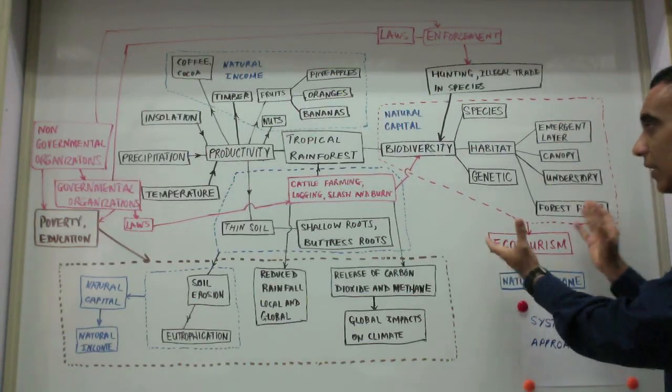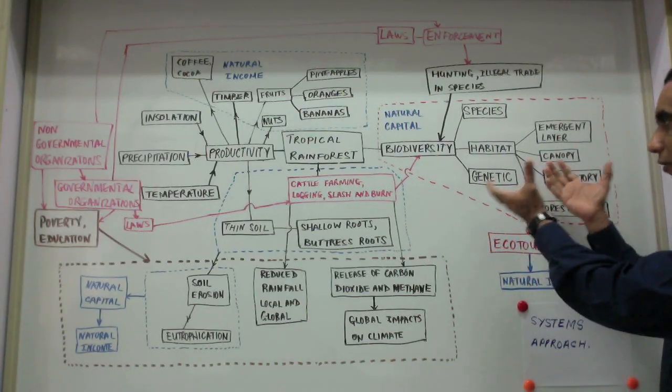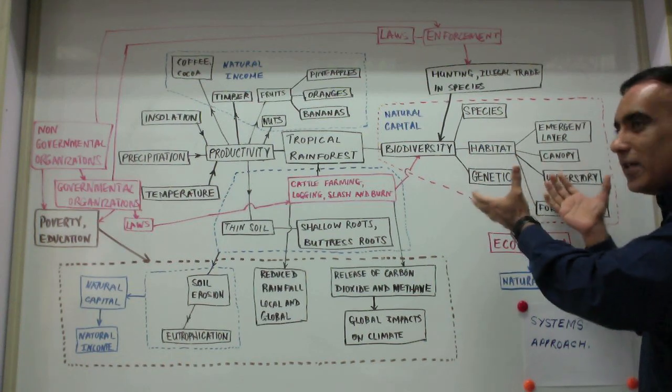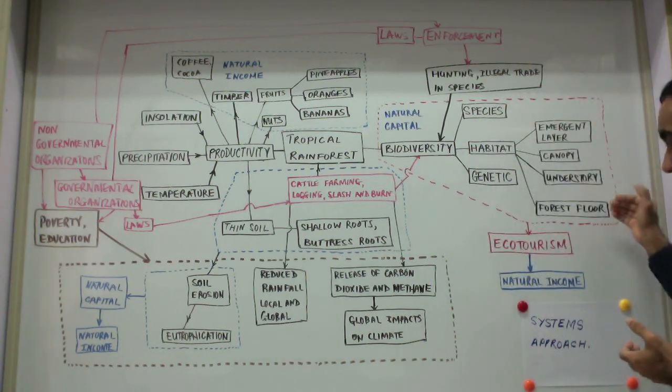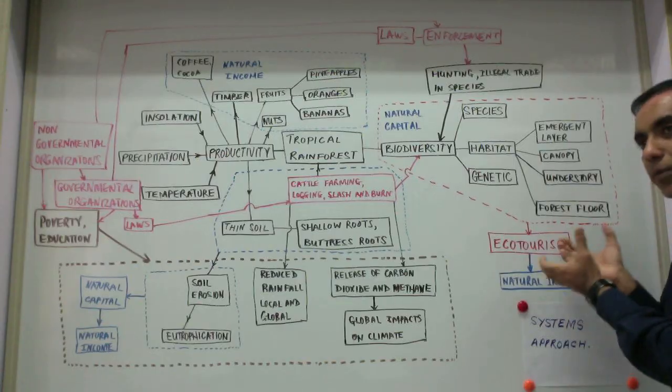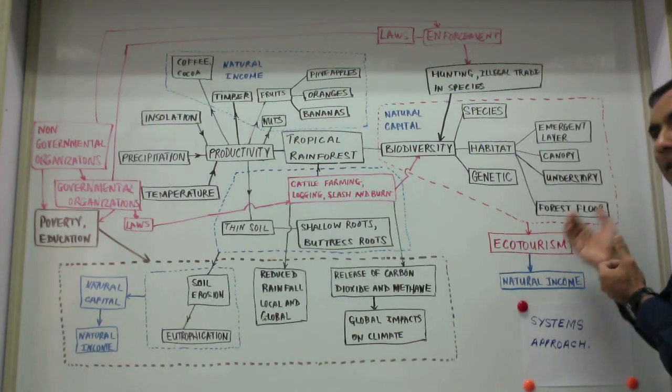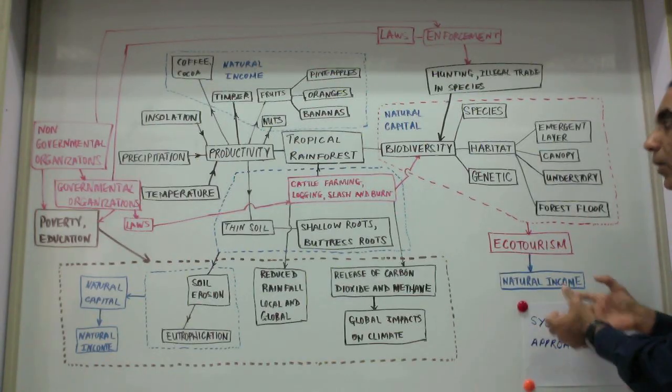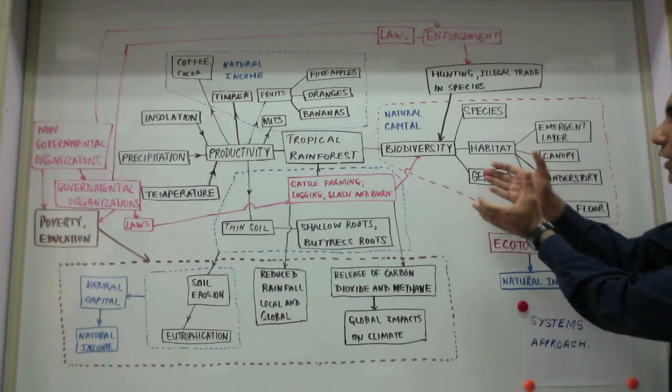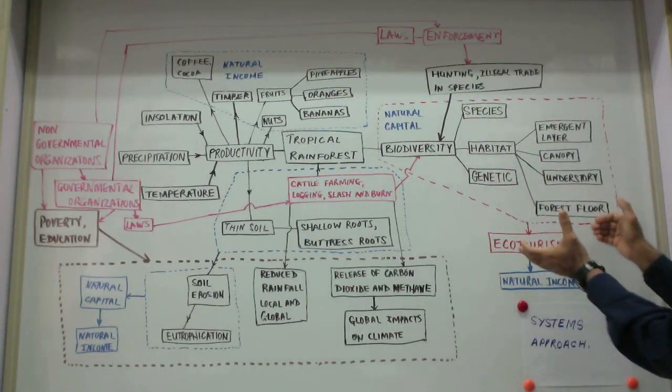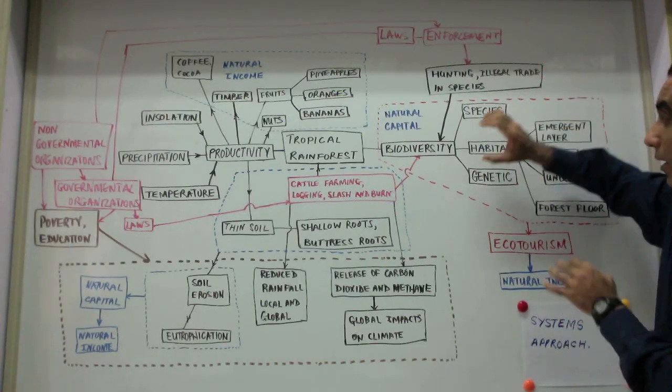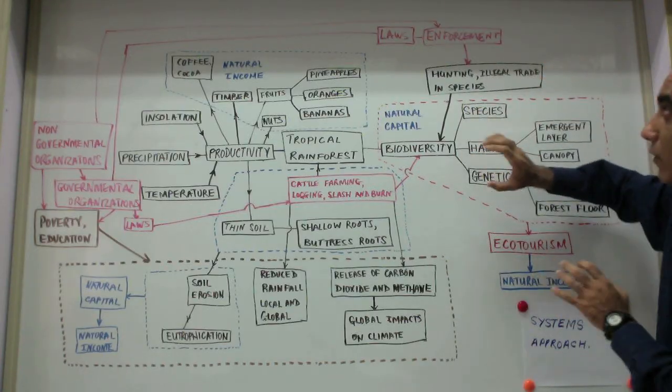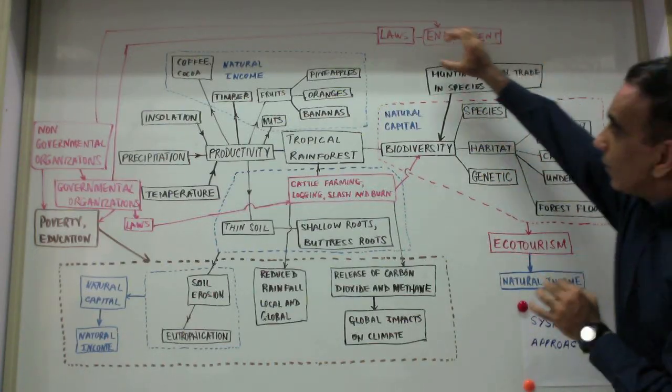The vast biodiversity of the rainforest is also a source of ecotourism, a great resource, a great piece of natural capital. And once ecotourism is practiced with care, this has the potential to generate immense amounts of natural income without depleting nature's natural capital. But issues like hunting and illegal trade in endangered species threaten the biodiversity of the rainforest.